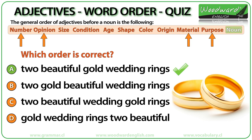Two beautiful gold wedding rings. Two is a number, beautiful is an opinion, gold is a material, and wedding refers to the purpose of the rings. The order is: number, then opinion, then material, then purpose.